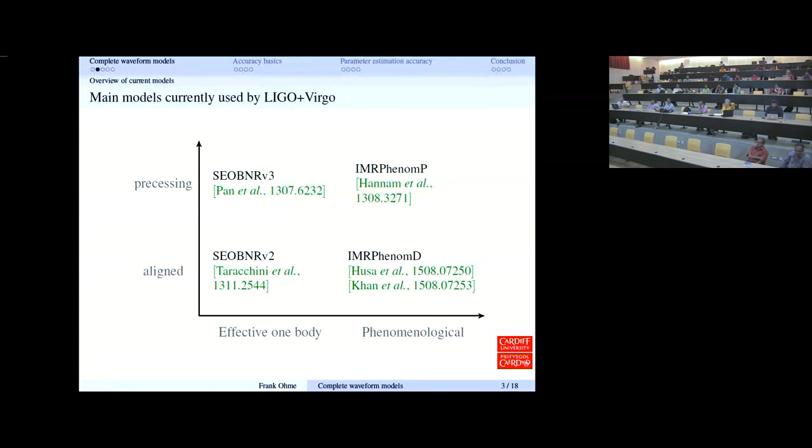Then there are the precessing approximants in each camp. On the next slide, I've indicated with arrows how these models are related to each other, because they're not all completely independent. There's a clear relation between the aligned and the precessing versions of these models. That was a breakthrough insight that various people—Patricia Schmidt, Richard O'Shaughnessy, Mike Boyle, and others—found a few years ago.